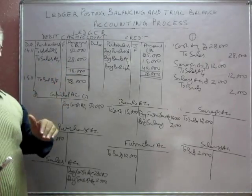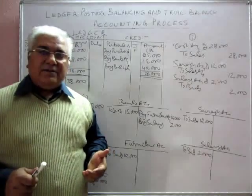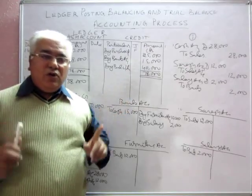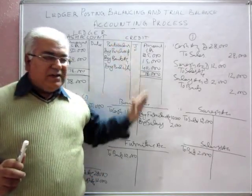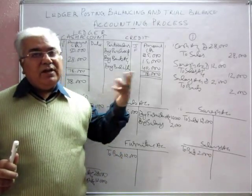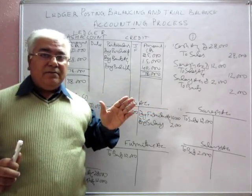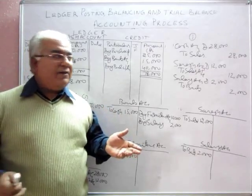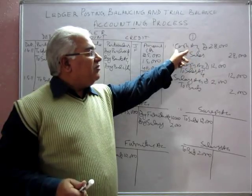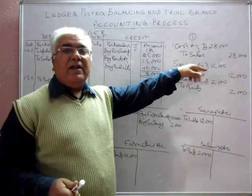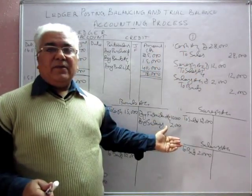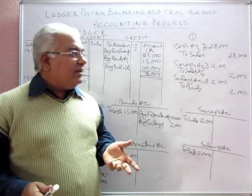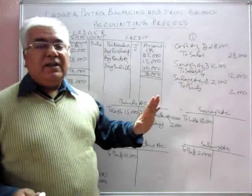Now let us prepare the trial balance. A trial balance is a list of all accounts in the ledger. Accounts with a debit balance are put on one side and accounts with a credit balance on the other side. If no mathematical mistakes have been made, both sides of the trial balance should tally — because every journal entry has two aspects with equal debit and credit amounts.